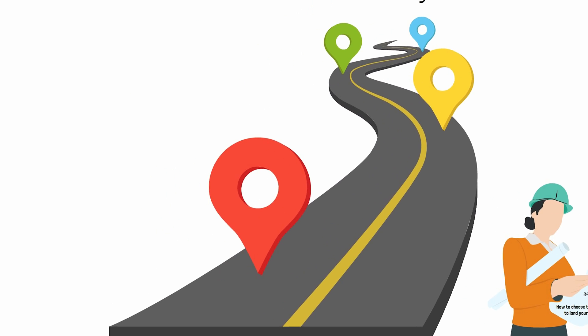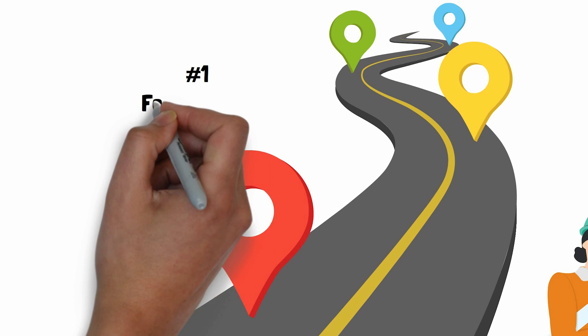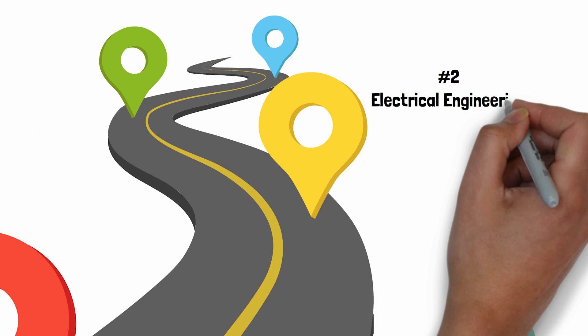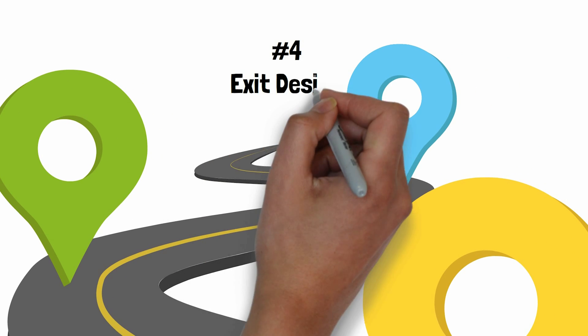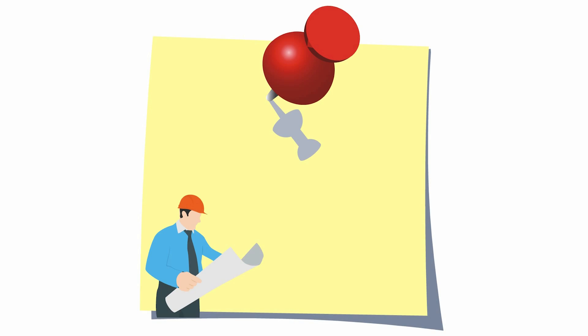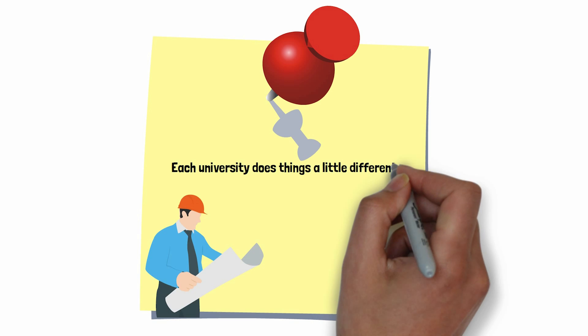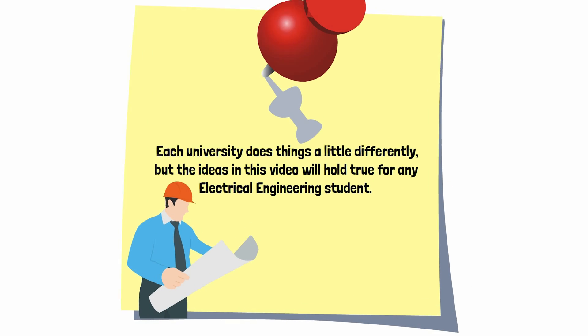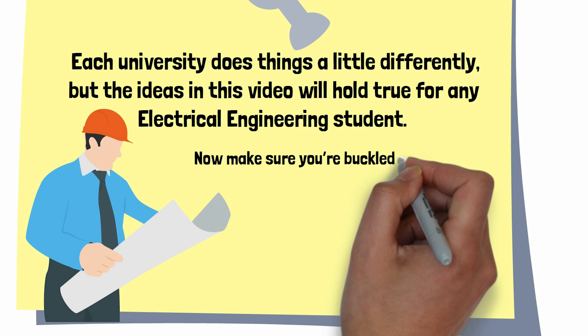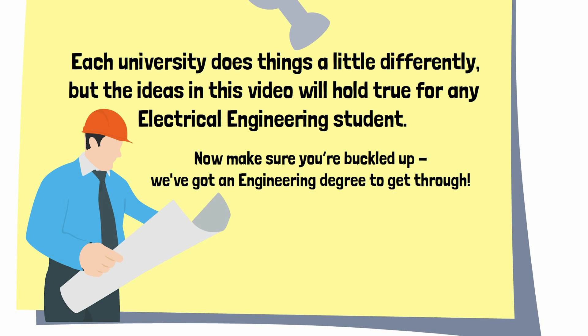We've split up the EE curriculum into four different sections: foundational subjects, electrical engineering core, field-specific courses, and the exit design class. Before we start, a quick reminder that each university does things a little differently, but the ideas in this video will hold true for any electrical engineering student. Make sure you're buckled up, because we've got an engineering degree to get through.